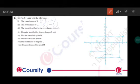The point identified by the coordinate minus 3 and minus 5. So we have minus 3, that is this, and minus 5. So this point is E.